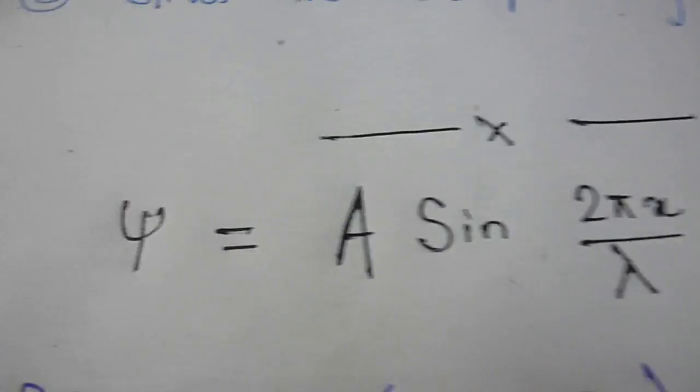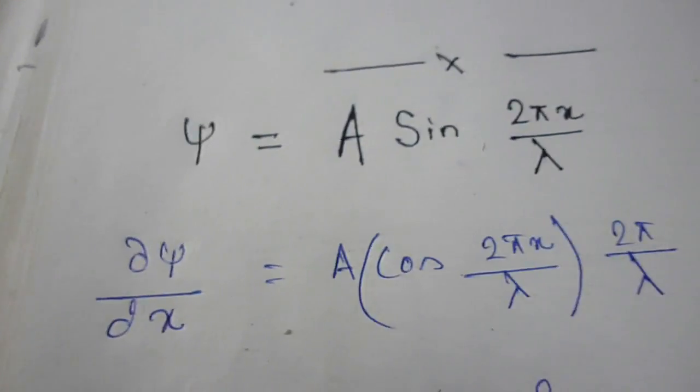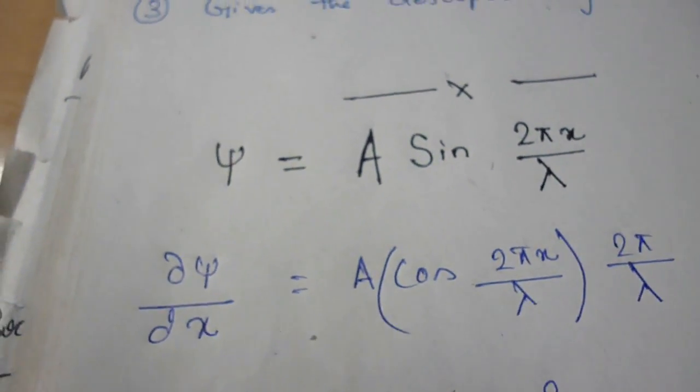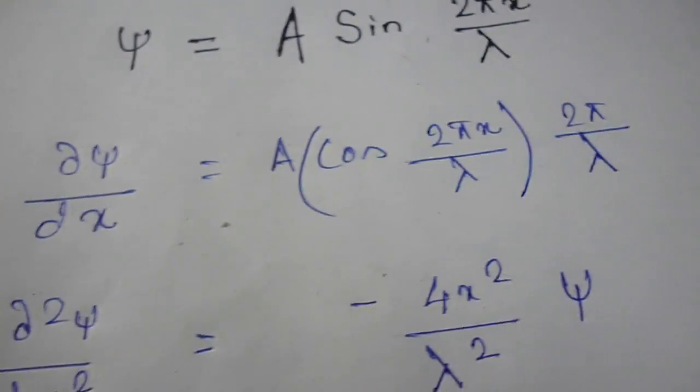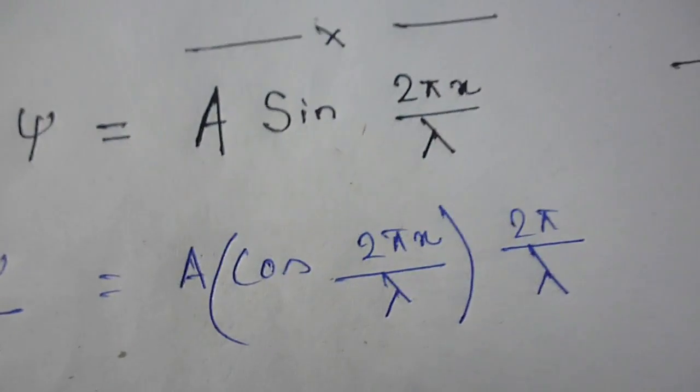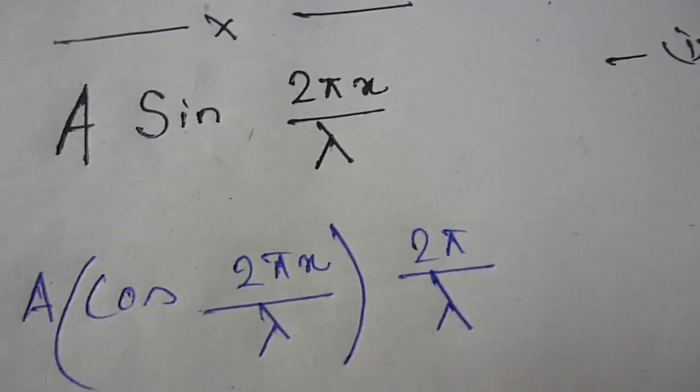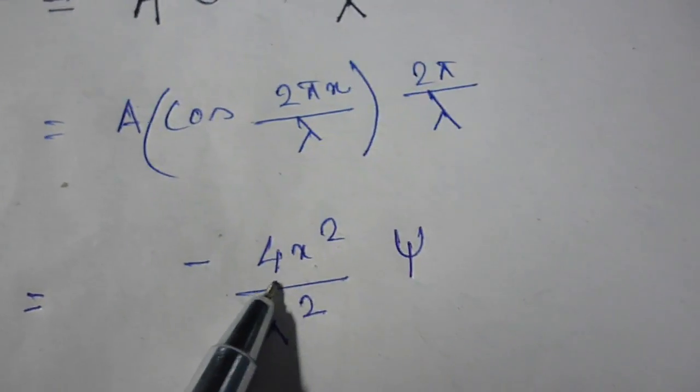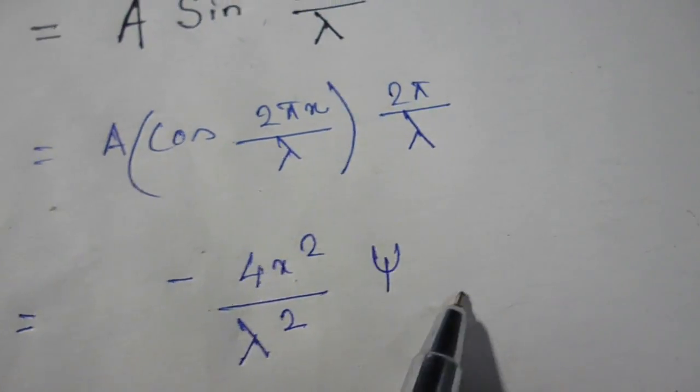Okay now let's move on. Now if I differentiate this equation as we have done here, you can see that it is dχ/dx and that one will give you a cos 2πx/lambda again multiplied by 2π/lambda. Now let's make a second differential d²ψ/dx² and you will get minus 4π²/lambda² into chi.